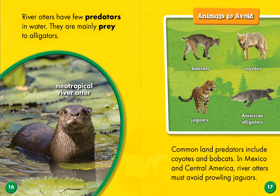River otters have few predators in water. They are mainly prey to alligators, and we don't have any alligators in Utah. Common land predators include coyotes and bobcats — we have some of those! In Mexico and Central America, river otters must also avoid prowling jaguars.